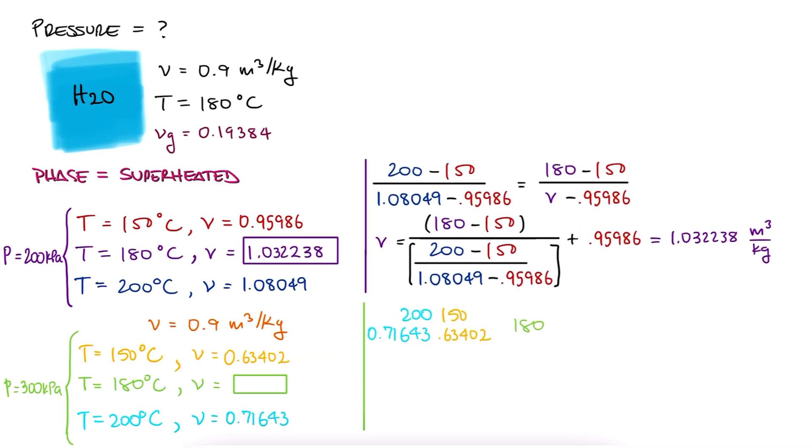We perform the same calculations using the values for the 300 kilopascal pressure, and we find that for a temperature of 180, the specific volume is 0.68.